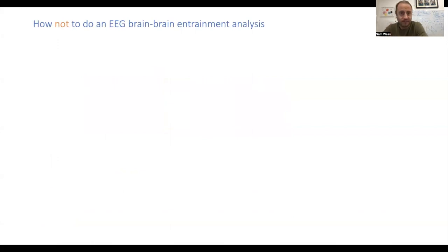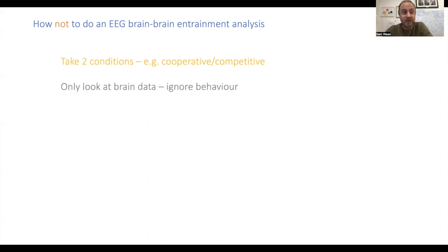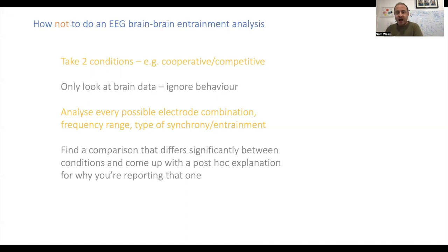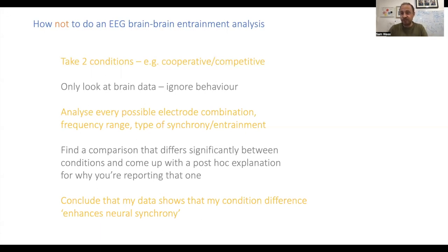So how not to do it: take two conditions — like cooperative versus competitive, or together versus apart, or in my studies, looking directly at one another versus not. You only look at the brain data, you average across your whole condition, you calculate your brain synchrony measure and average it across the whole condition. You don't measure anything to do with the micro details of the behaviour. You analyse every possible electrode combination, every possible frequency range, and every possible type of synchrony. You find a comparison that differs significantly between conditions, come up with a post-hoc explanation, and conclude that your experiment has shown that your condition enhances neural synchrony.